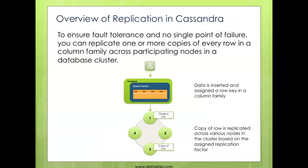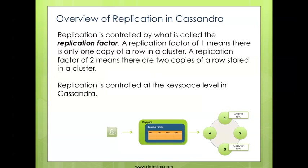So now let's take a look at replication. You've got your data distributed amongst all your nodes in Cassandra — that's all well and good. But what if one of the nodes fails? If you want to ensure fault tolerance in your database cluster, you want to enable replication so that you store copies of your rows on one or more nodes in your database cluster. This is carried out by using what's called the replication factor in Cassandra. A replication factor of one means basically there is no replication. A replication factor of two means it's going to store the original row on one node and a copy of that row on one of the other nodes in your cluster, and this replication factor is controlled at the keyspace level when you create a keyspace in Cassandra.